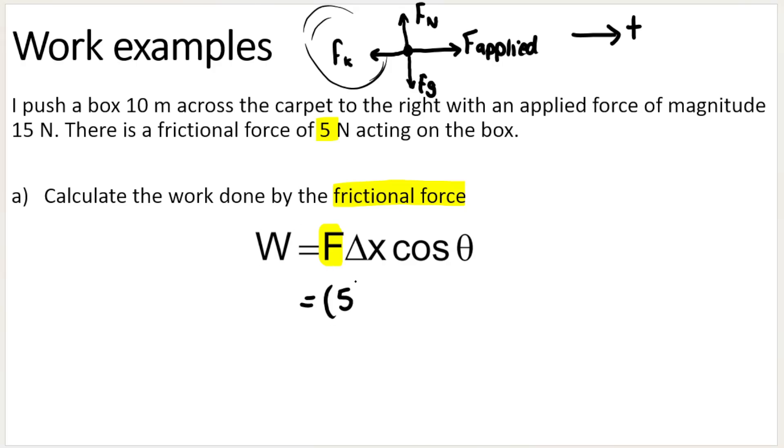But when you calculate the work done by a force, the work done by friction, you never sub it in as a negative. You leave it as a positive. So it's going to be 5. Don't sub it in as a negative. How far did we move? My displacement is 10.